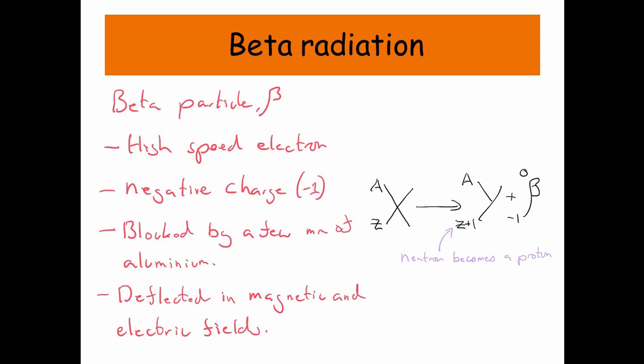the proton number actually becomes bigger. Now, why does it become bigger? That's because a neutron inside the nucleus has actually spontaneously turned into a proton and released a beta particle or an electron.